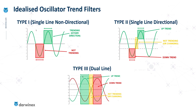Last time we looked at three types: the single line non-directional, the single line directional, and the dual line indicators. We talked about how a good example of a Type 1 trend filter is the ADX main line, Type 2 would be the stochastic indicator, and for Type 3 a good example is the Aroon indicator — and this is an indicator I really like.